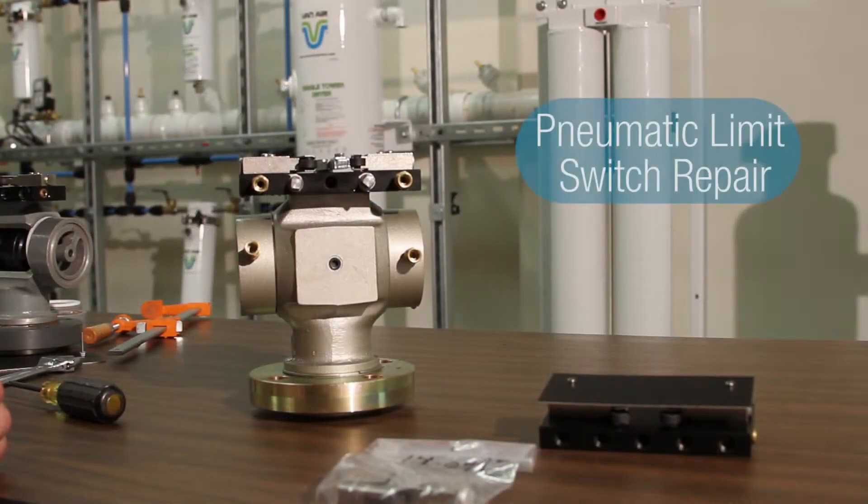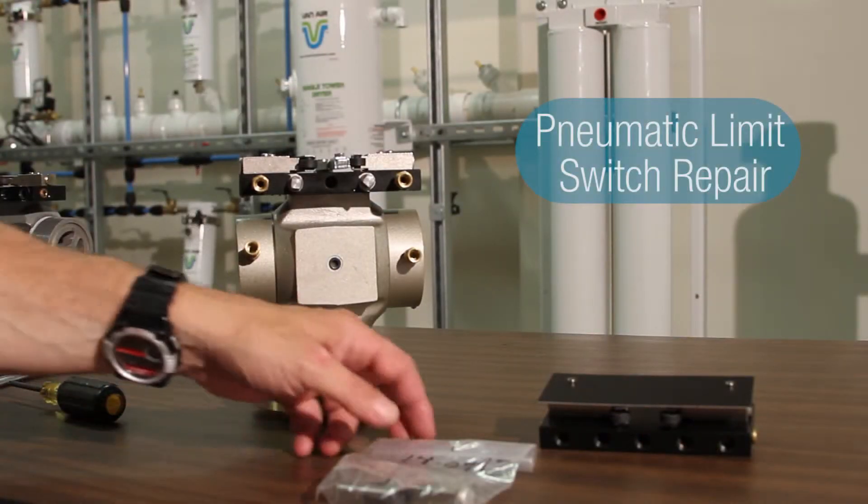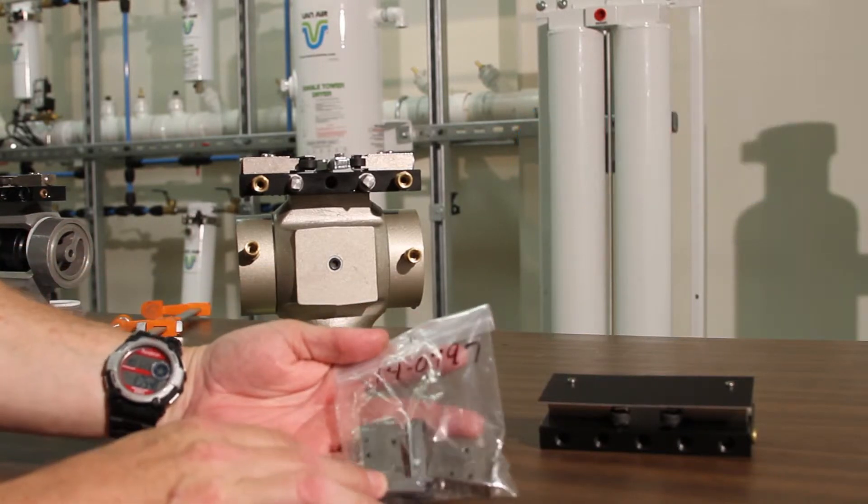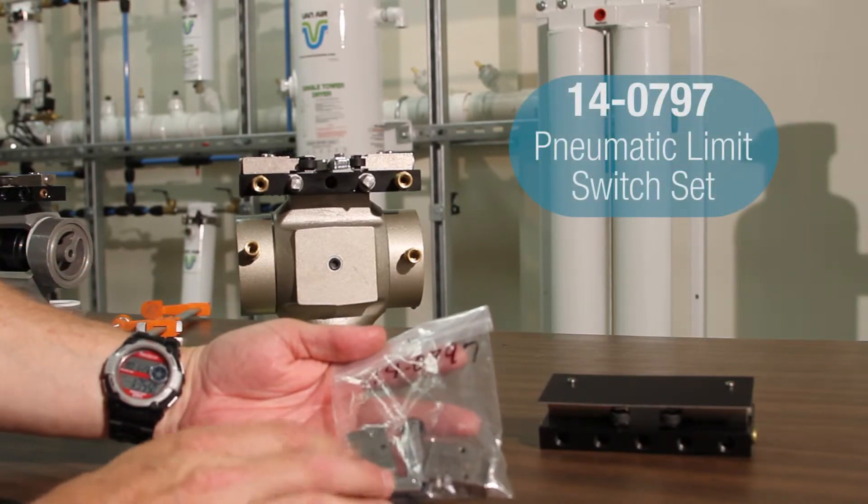There's two kits that have the pneumatic limit switches in them. You can get the pneumatic limit switches by themselves in a kit that's a 14-0797.